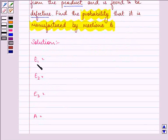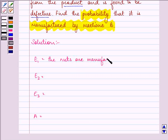Event E1 describes that the nuts are manufactured by machine A.